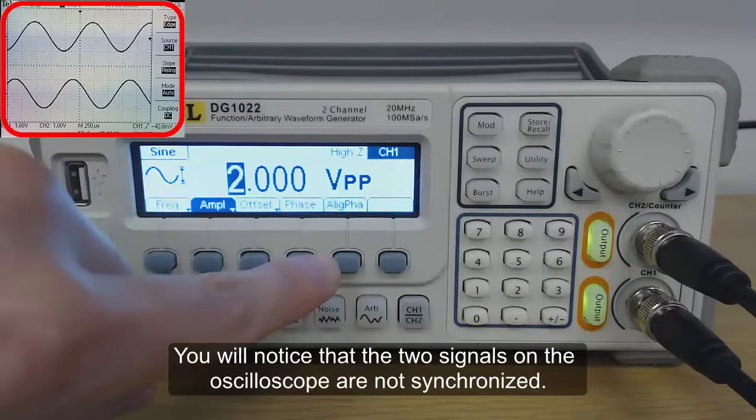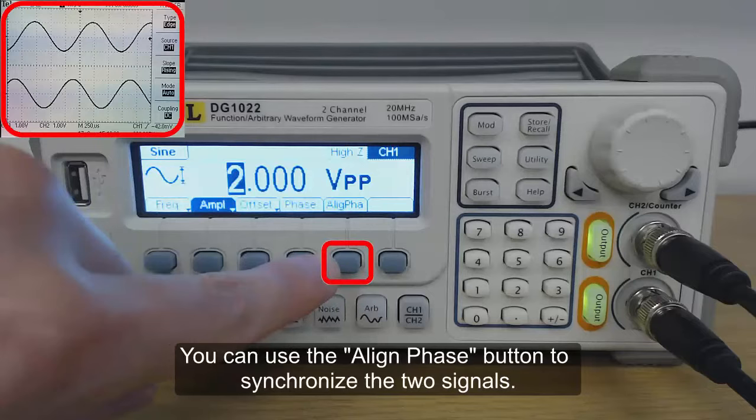You will notice that the two signals on the oscilloscope are not synchronized. You can use the align phase button to synchronize the two signals.